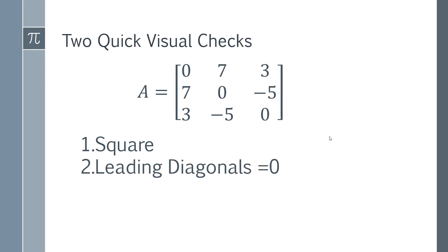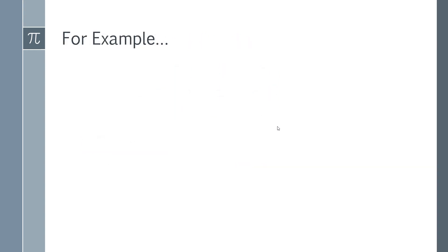The second check is that the leading diagonals must be zero. If you have any numbers on these leading diagonals it immediately tells you that the matrix is not going to be skew symmetric, because when you find the transpose these elements don't actually change position, so they're not going to switch signs.